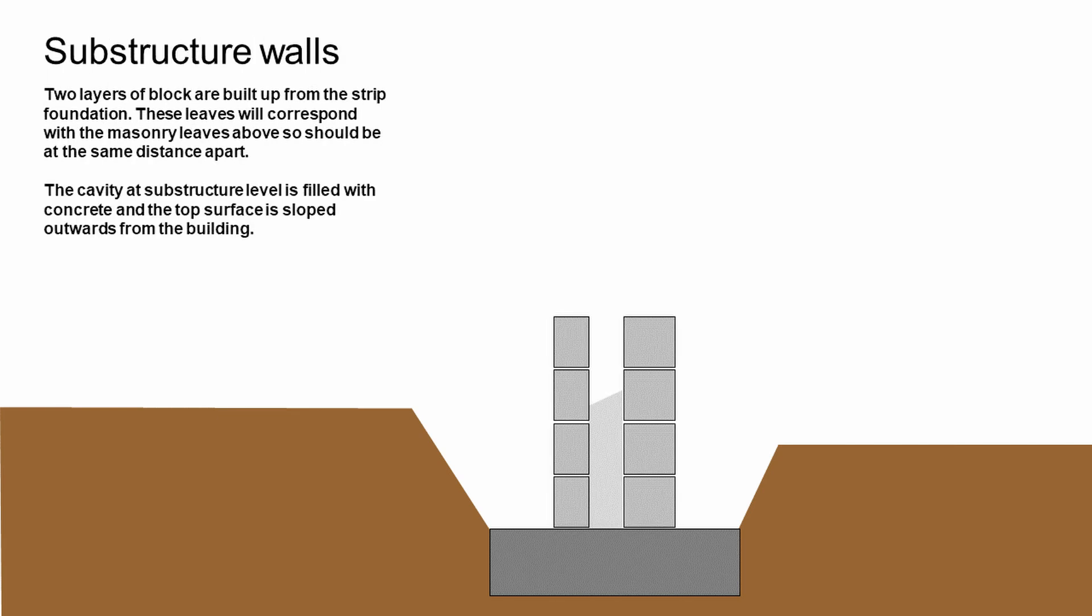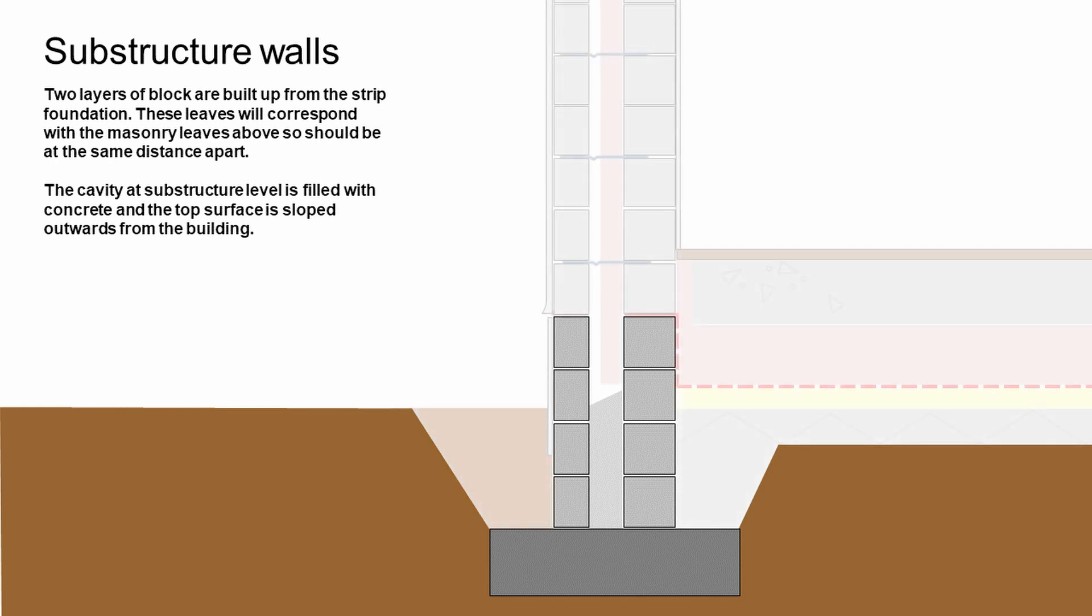Following that, we'd be looking to erect the substructure walls. This would be two layers of block work, usually, built up off the strip foundation. These layers would correspond to the width of the cavity wall above. The inner block work and the outer block work would be immediately below the layers of masonry above. The cavity at substructure level is usually filled with concrete, and the top surface of that is sloped facing outwards from the building.